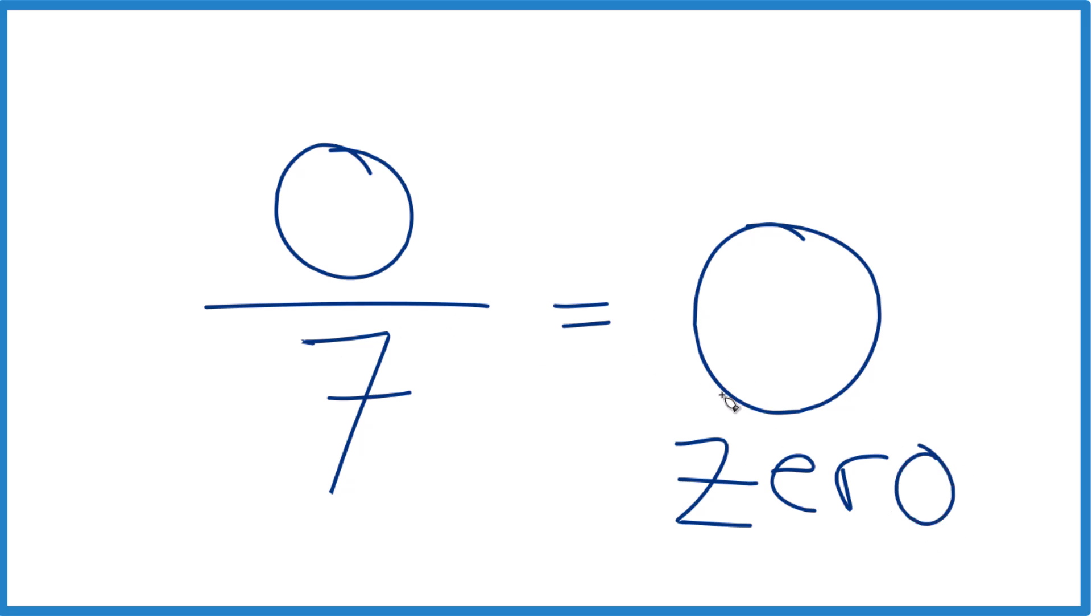So 0 divided by 7, that equals 0. In fact, 0 divided by any number is going to be 0. With just one exception, 0 divided by 0, we say that's undefined.